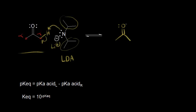We would have electrons on this carbon now — that's a carbanion. Let me show those electrons. These electrons in magenta are going to come off onto this carbon, and this carbon is a carbanion because remember, there are also two other hydrogens attached to it, so that's what gives it a negative one formal charge.